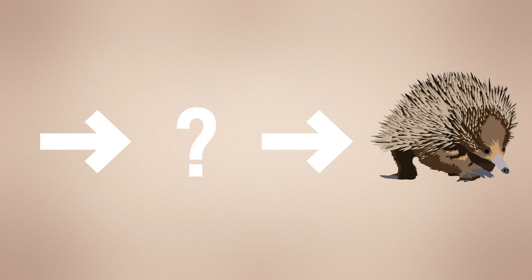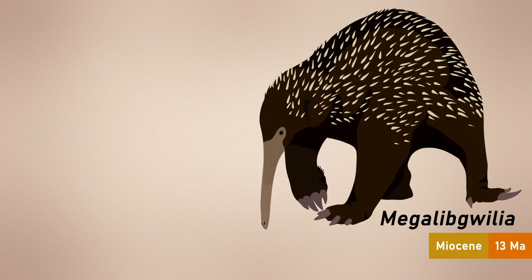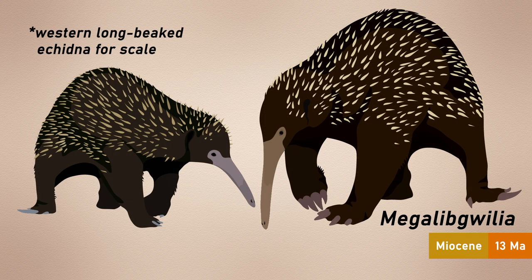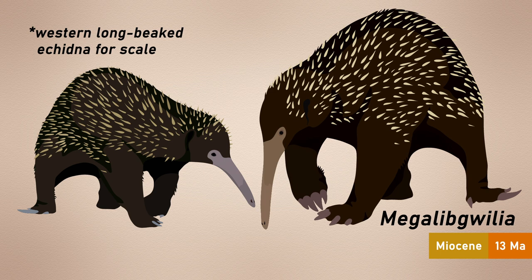The echidna form is only found very recently in the fossil record, the earliest being a mere 13 million years old, with the impressively huge but echidna-like Megalibguilia. The other monotremes known filling the gap between Steropodon and Megalibguilia all share a particular set of features.